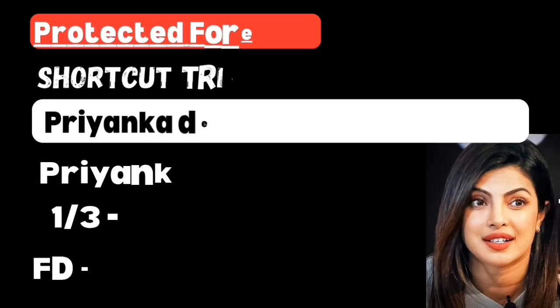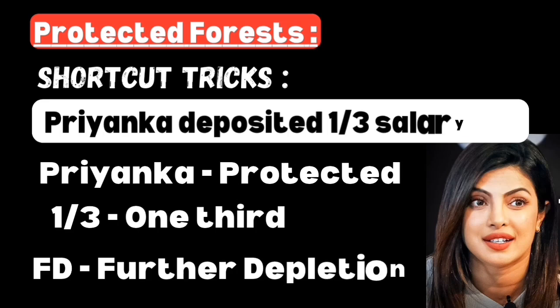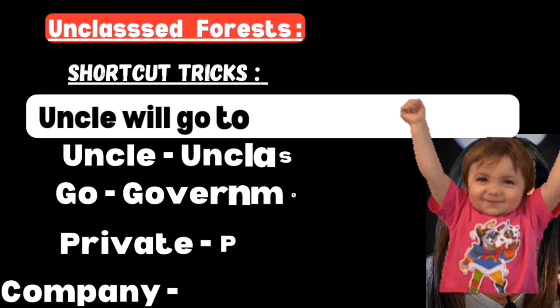Protected forest - the shortcut is 'Priyanka deposited one by third of her salary as FD.' Take the word Priyanka: 'PR' stands for Protected forest. 'One by three' means it covers one-third of the total forest area. 'FD' refers to 'further depletion' - protected forest land is protected from further depletion.